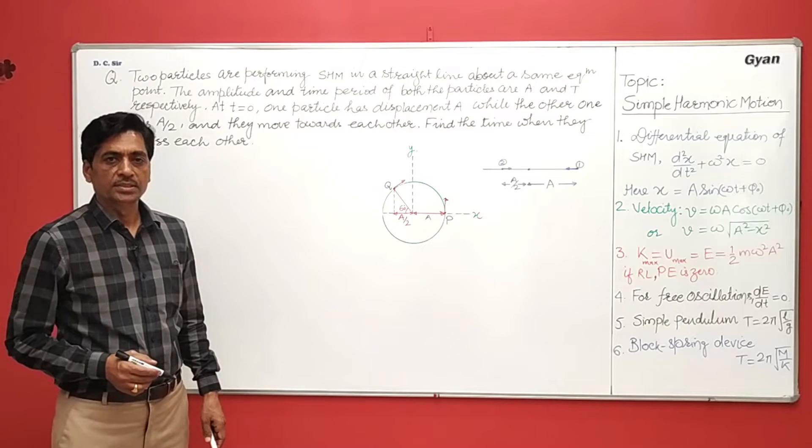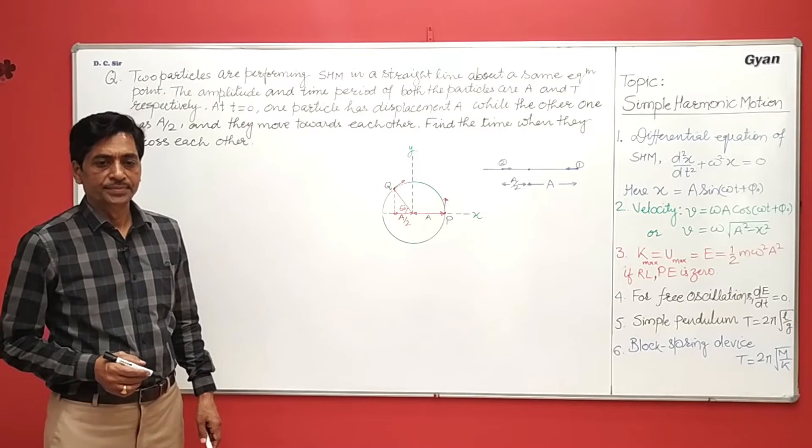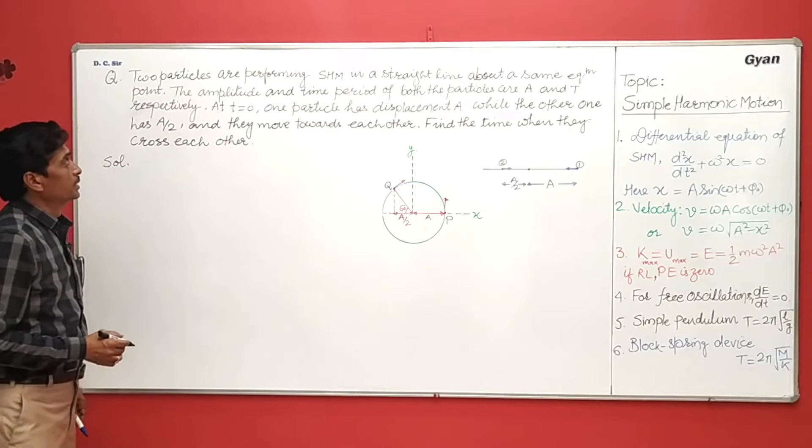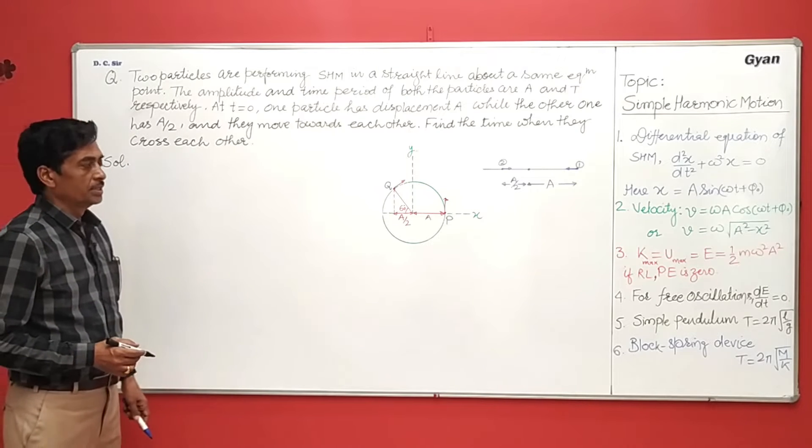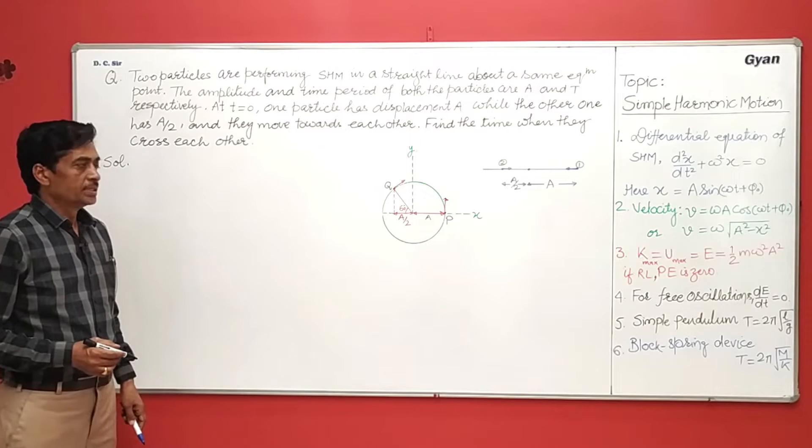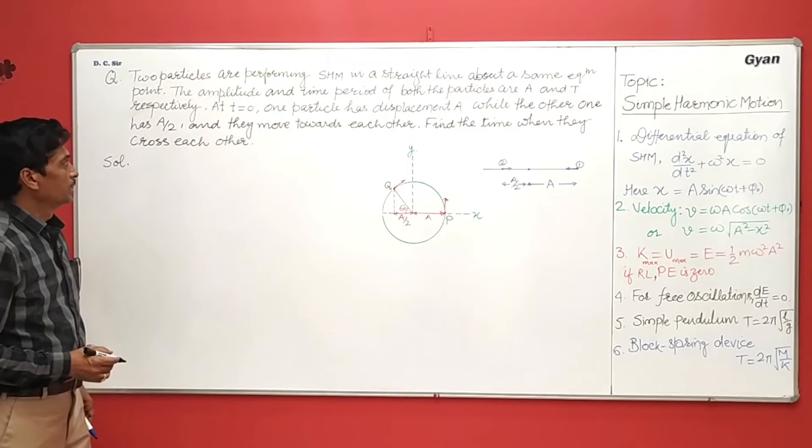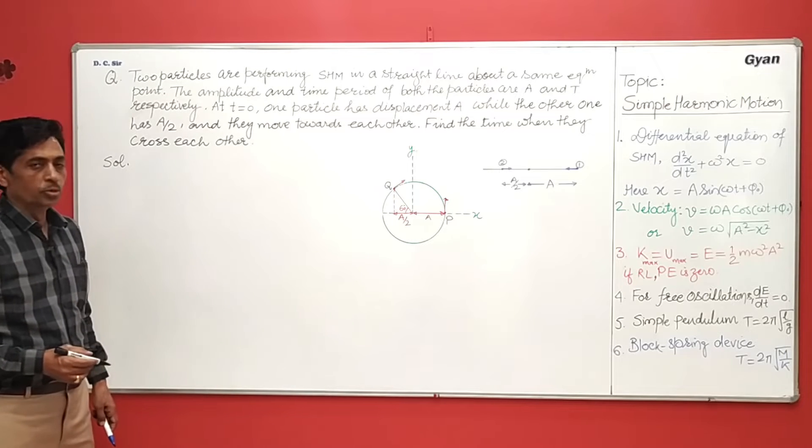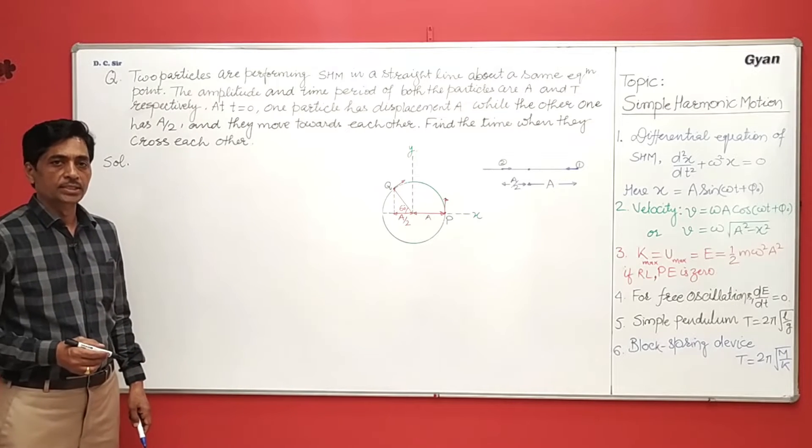Students, I am going to discuss the problem of simple harmonic motion. The problem is two particles are performing a session in a straight line about the same equilibrium point. The amplitude and time period of both particles are a and t respectively.